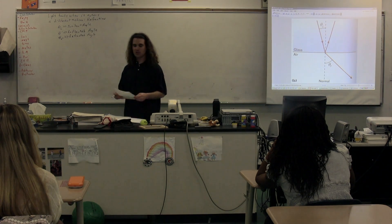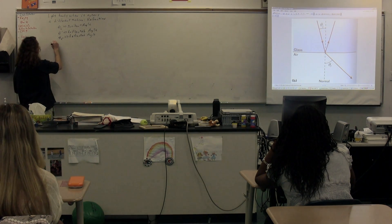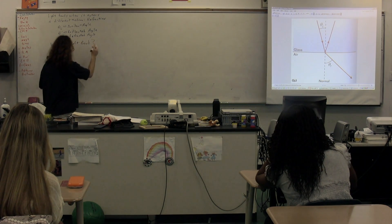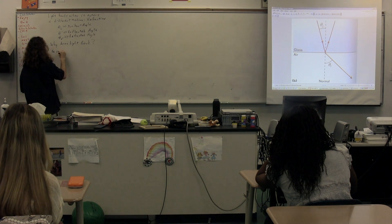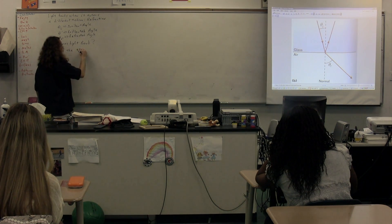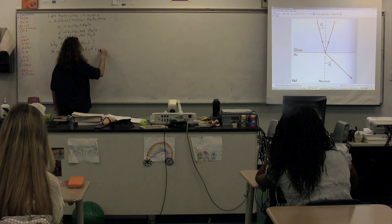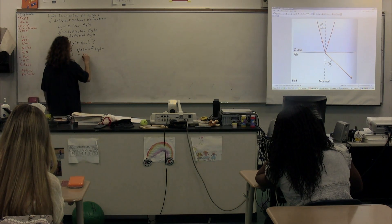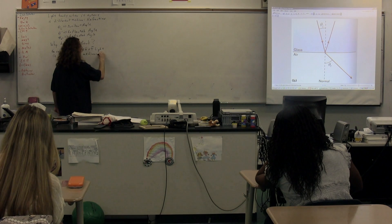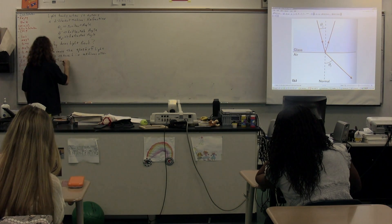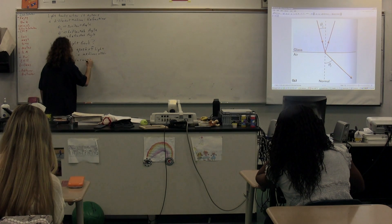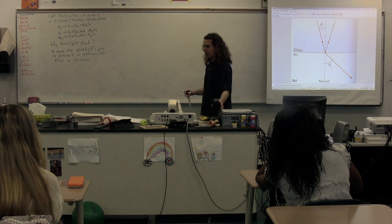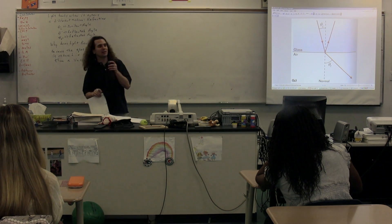So the question is: why does the light bend? The answer is because the speed of light is reduced in mediums other than a vacuum. The speed of light is 3 times 10 to the 8 meters per second — that's the speed of light in a vacuum — and light will always move slower than that in other mediums.